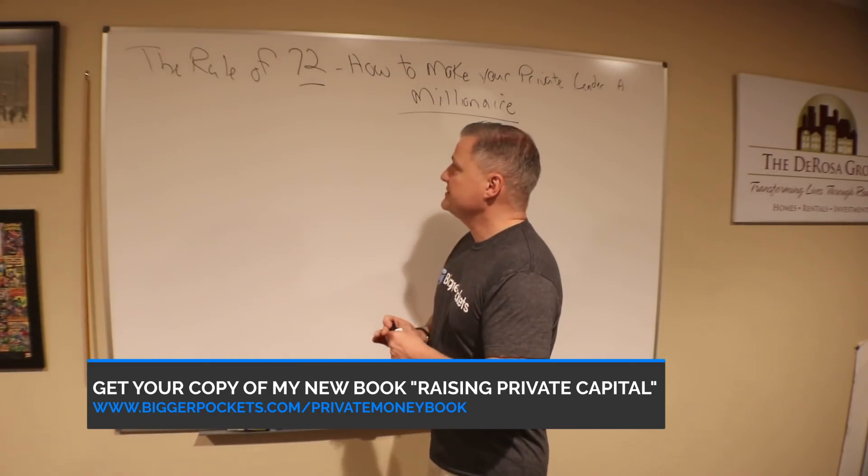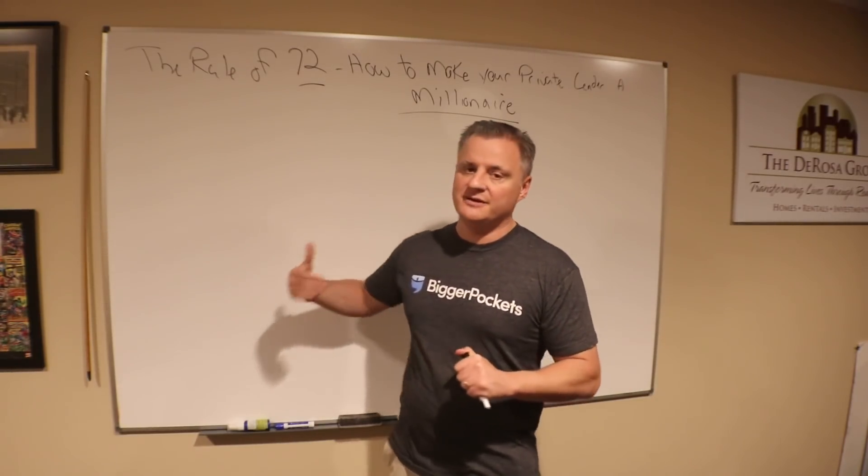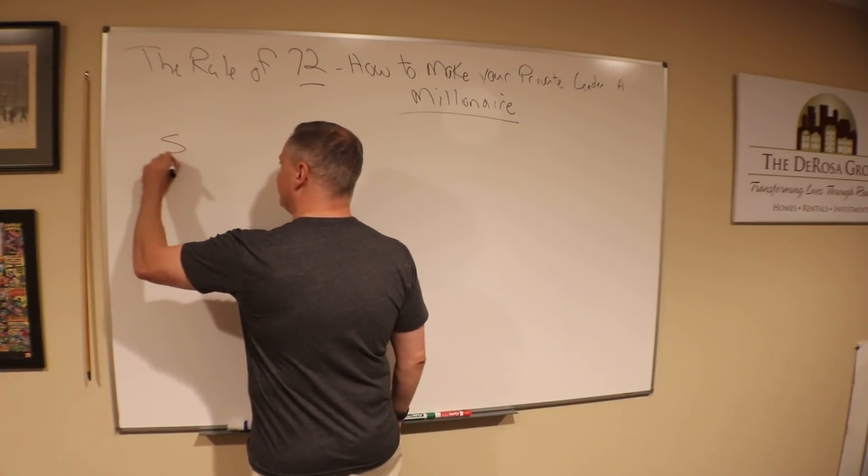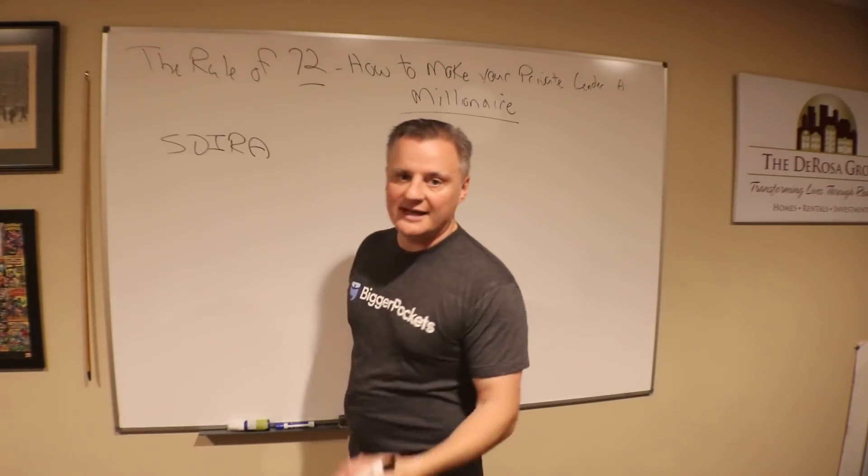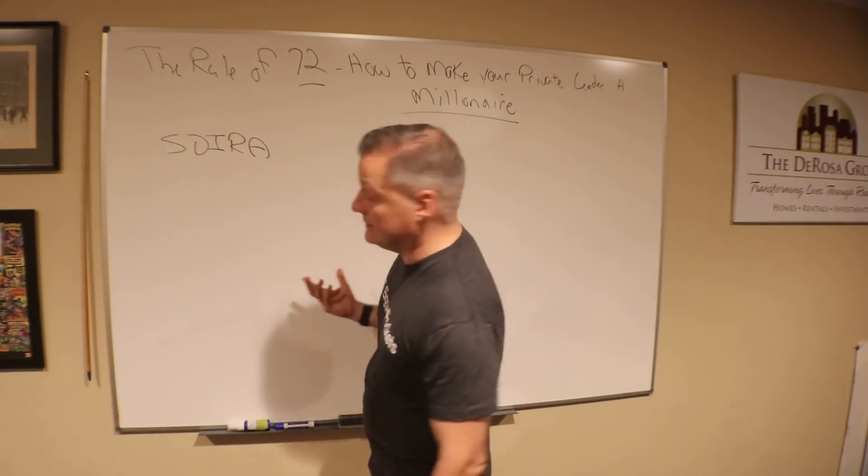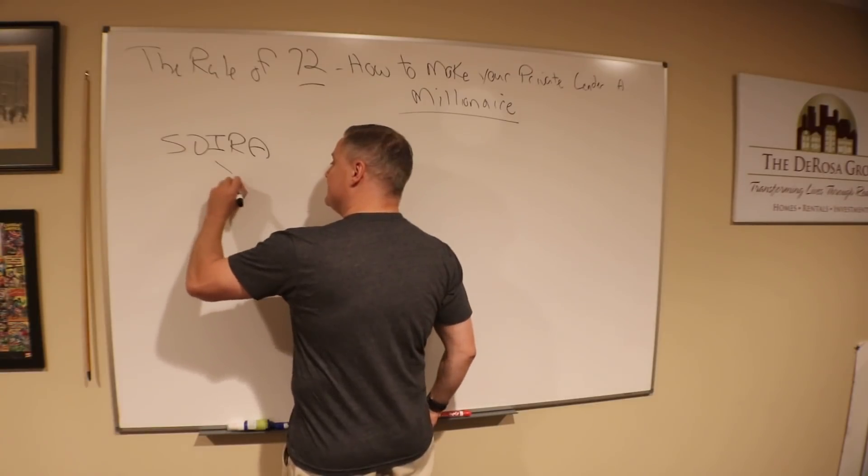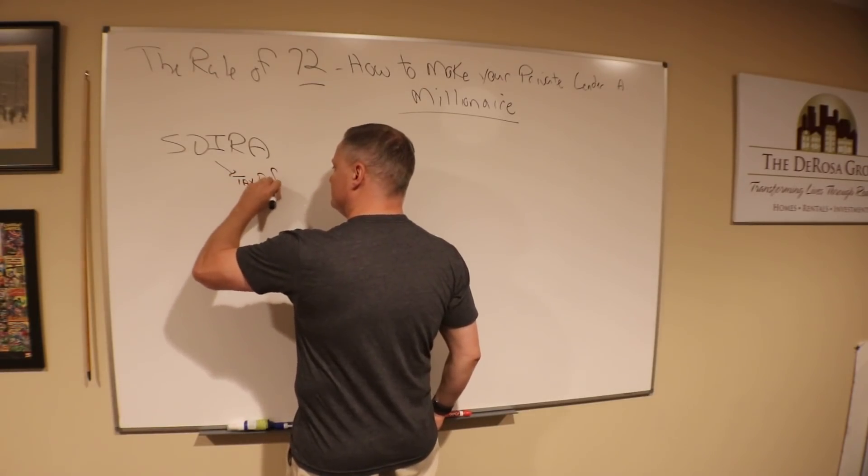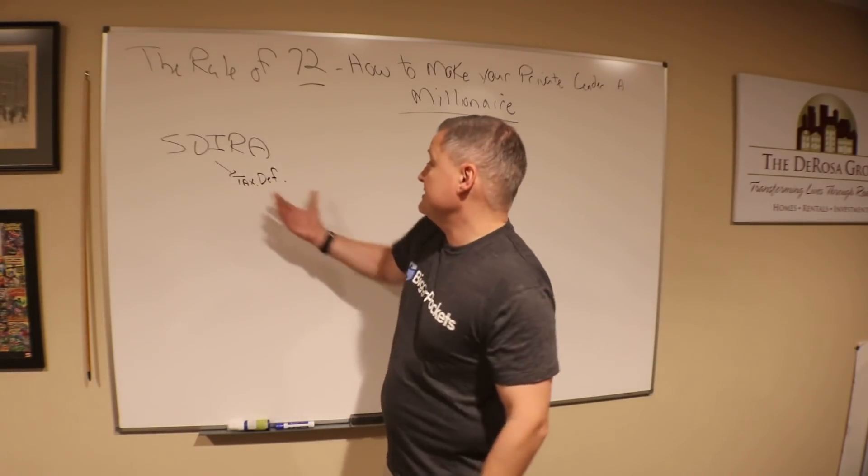Here's how this goes. This concept works best if you're dealing with a self-directed IRA, which is a retirement account that allows people to invest their retirement money into all kinds of vehicles, such as real estate loans. What makes this great for the millionaire calculation is that this is a tax-deferred vehicle, meaning that whatever income they make doesn't get taxed.